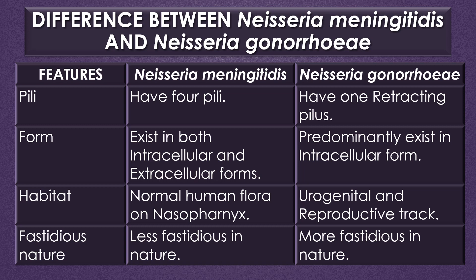Regarding form, Neisseria meningitidis exists in both intracellular and extracellular forms, but Neisseria gonorrhoeae predominantly exists in intracellular form. Regarding habitat, meningococci acts as normal flora of the nasopharynx, and gonococci acts as normal flora of the urogenital and reproductive tract.